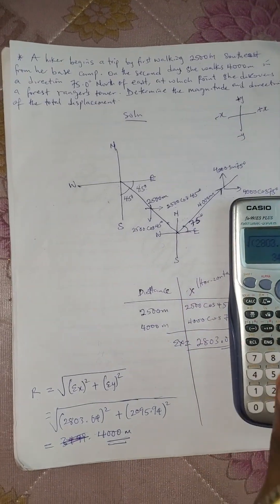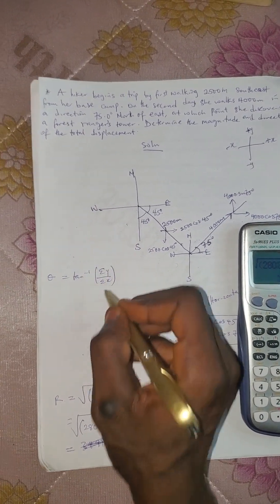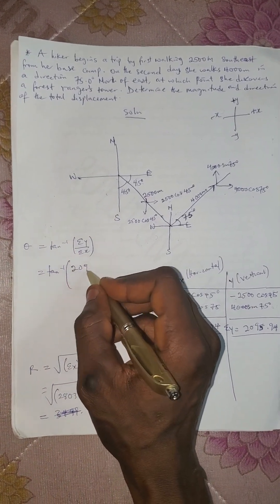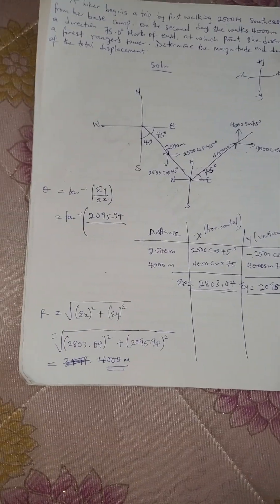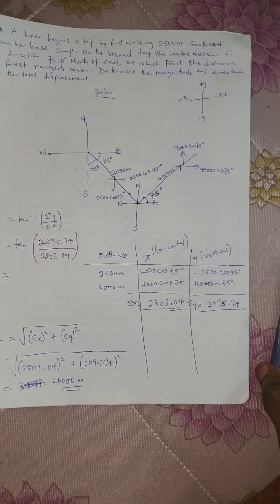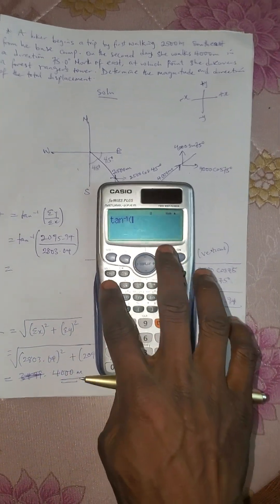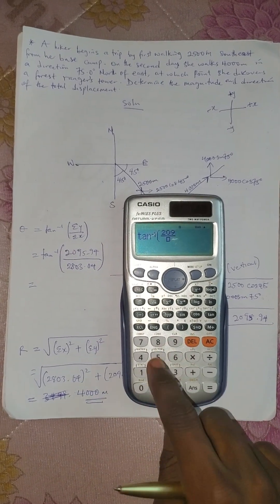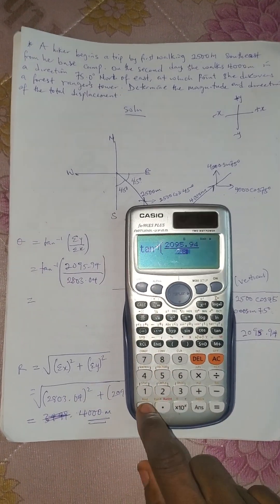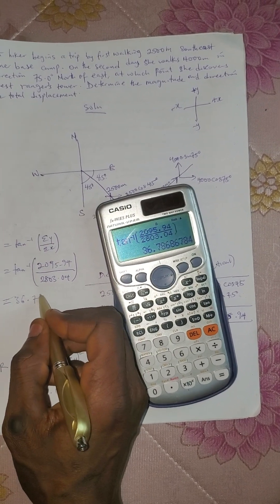So the magnitude is 4000 meters. Now what will be the direction? Don't forget the formula: theta equals tan inverse of summation y over summation x. This becomes tan inverse of 2095.94 over 2803.04. Press shift tan on the calculator: 2095.94 divided by 2803.04, close the bracket, equals. The direction is 36.79 degrees.